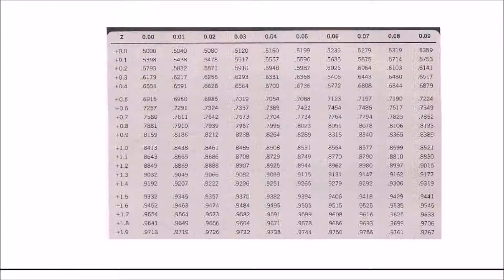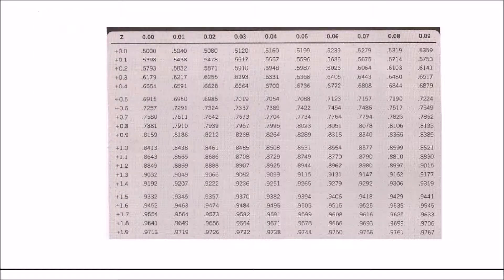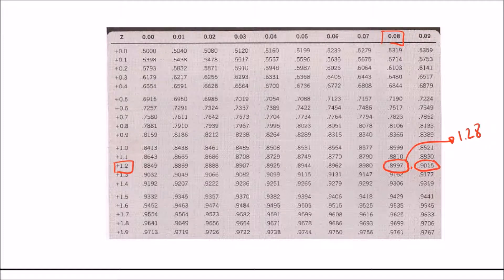Looking at the Z-table, 0.9 falls between two values: 0.8997 corresponds to Z = 1.28, and 0.9015 corresponds to Z = 1.29. The value 1.28 comes from the row 1.2 and column 0.08 in the Z-table. So for 0.8997, the Z value is 1.28, and for 0.9015, the Z value is 1.29.